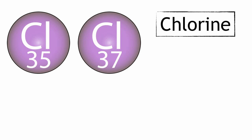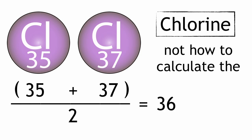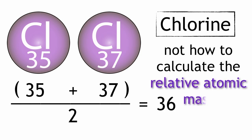In most cases, to take a simple average, you would just add the values together and then divide by the number of values. In this case, it would be 35 plus 37 divided by 2, giving an average of 36. But this is not how you calculate the relative atomic mass.